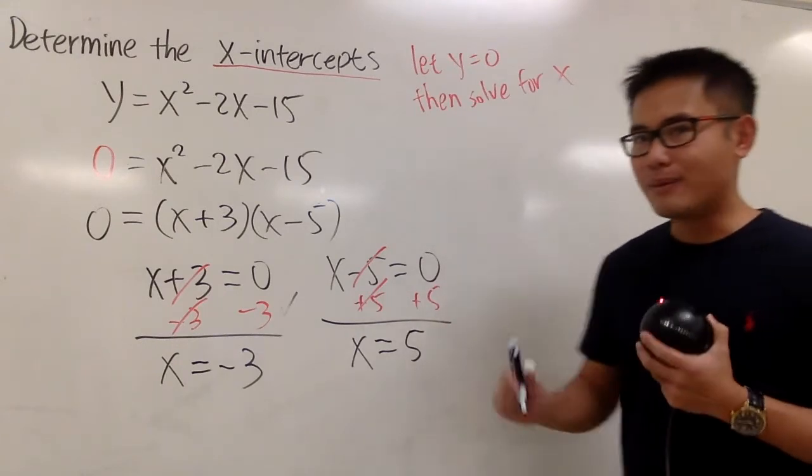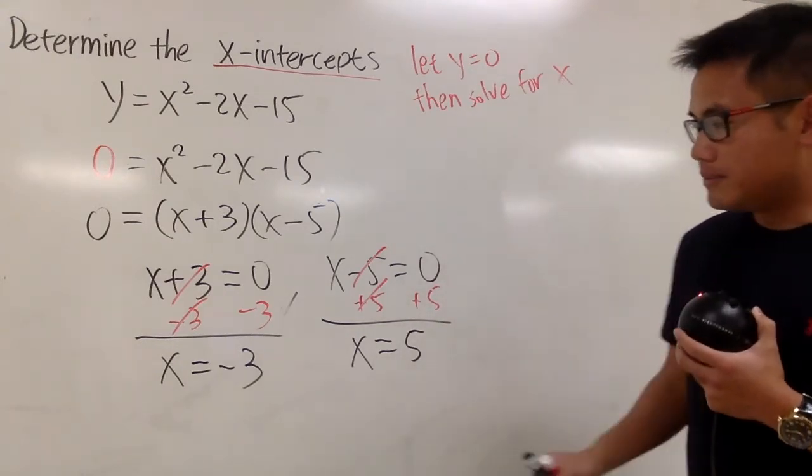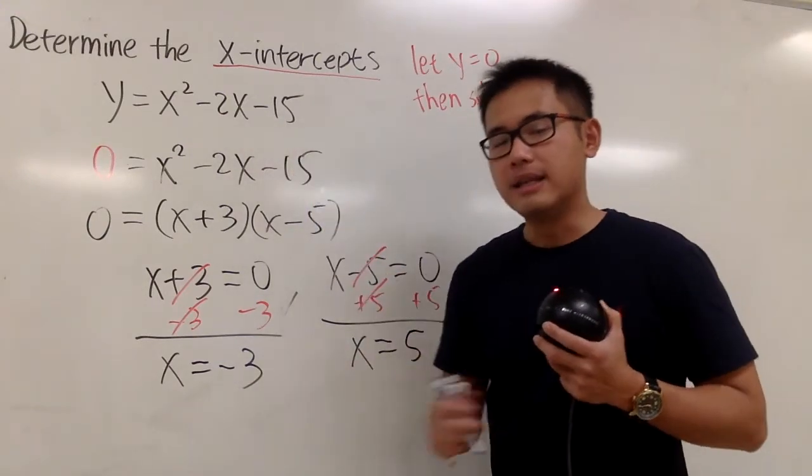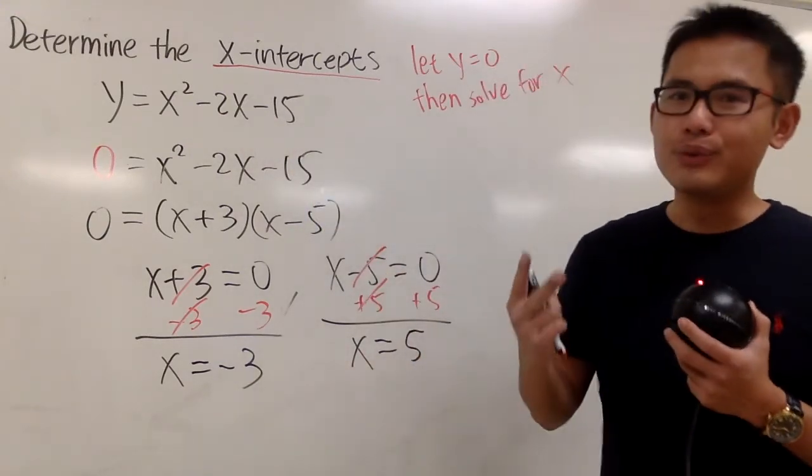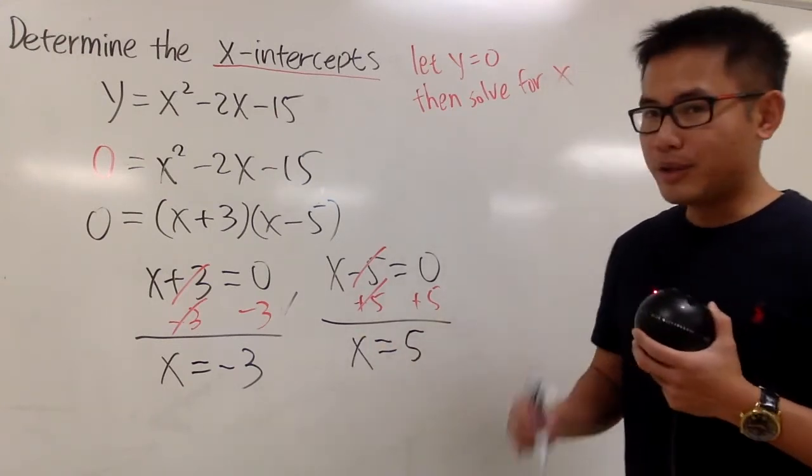So we did all the work. Now, this is how we are going to write down the answer. Remember, when we have a parabola, it's totally possible to have two x-intercepts. In this case, we do have two of them. This is how we write down the answer.